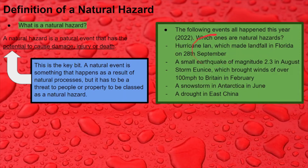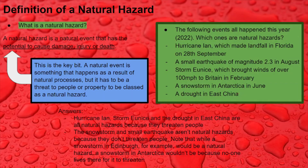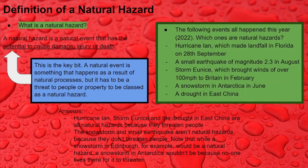I've got five examples of natural events here to illustrate the definition, and you can have a go at sorting which ones are events and which ones are natural hazards. The answers: Hurricane Ian, Storm Eunice, and the drought in East China — I would classify those three as natural hazards, mainly because of their locations: Florida, East China, and Britain. They're all relatively densely populated areas where they have the potential to cause damage, injury or death.